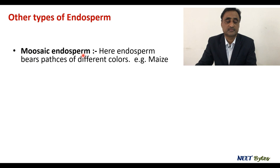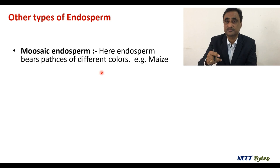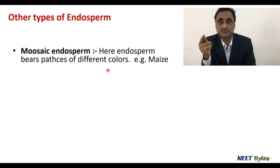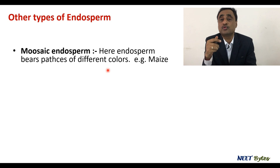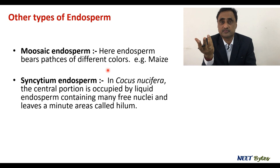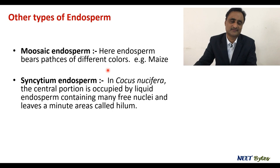Now let's talk about mosaic endosperm. Here, the endosperm bears different colors — you might have seen in maize that some seeds bear different colors, dark yellow or light yellow. This is mosaic endosperm, and it happens due to a genetical reason — specifically due to jumping genes or transposons. There is one more type called syncytium endosperm. Syncytium means multi-nuclei, and the typical example is coconut water, which is a liquid endosperm with a large number of free nuclei acting as nutritive tissue.